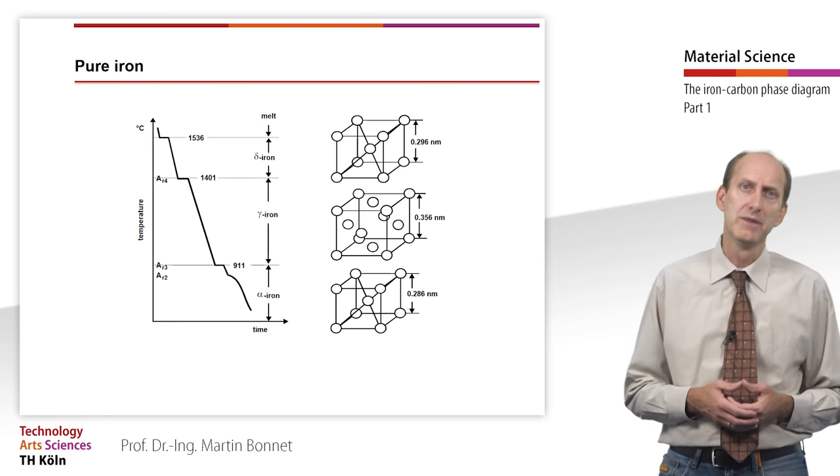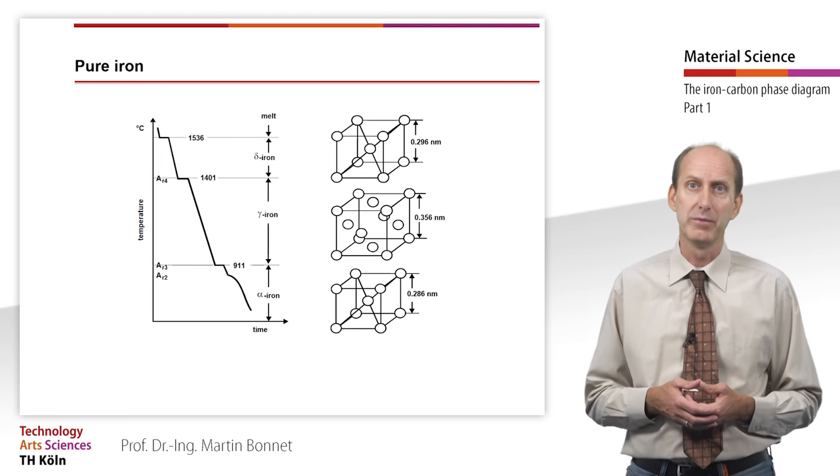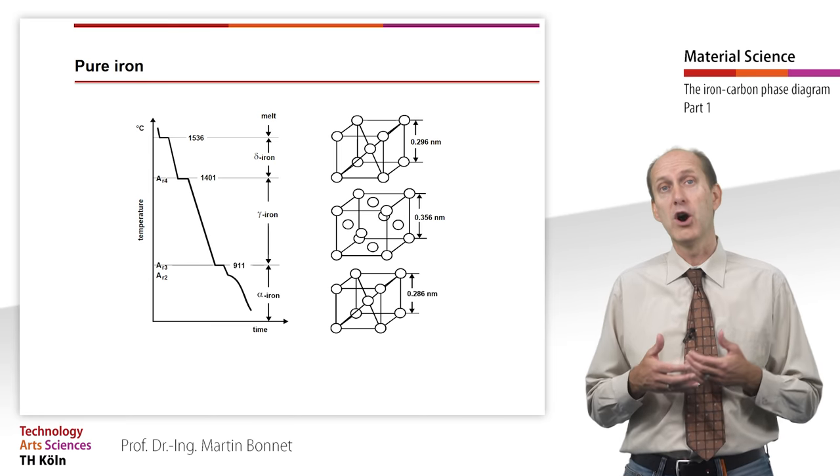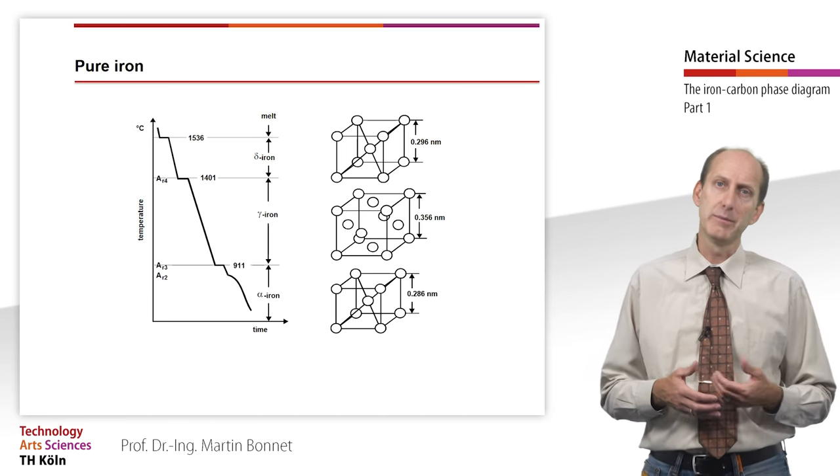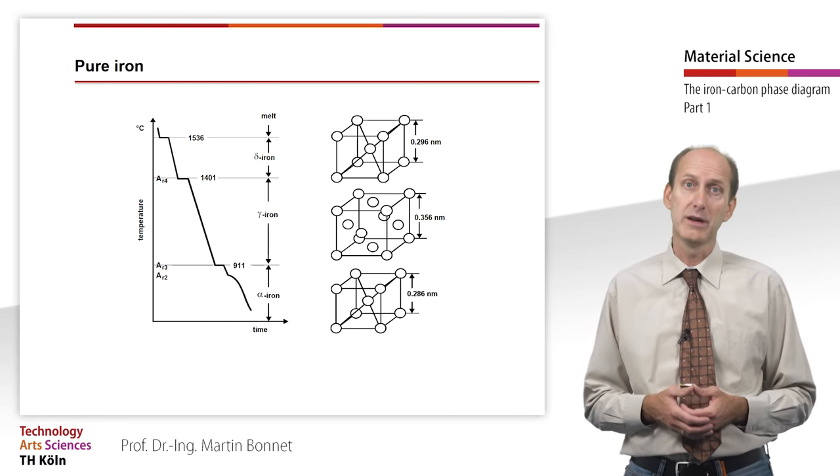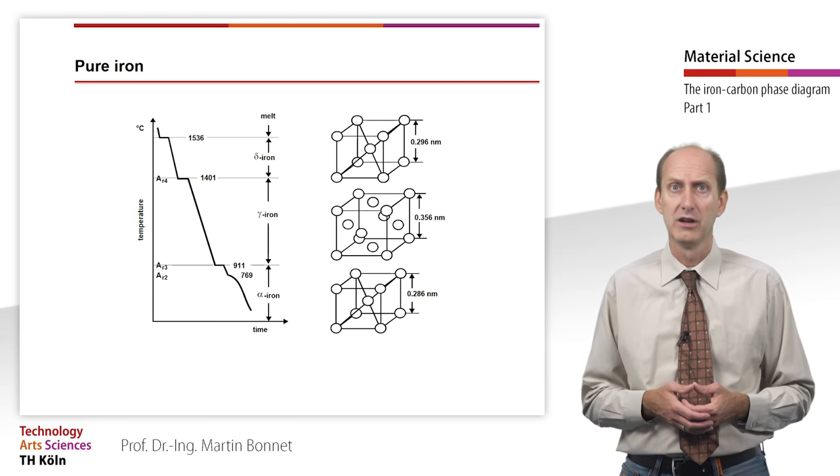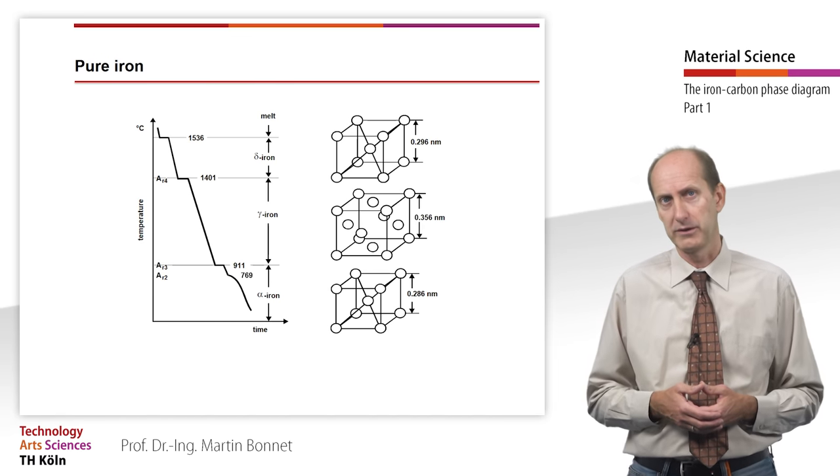At a certain temperature, the ferromagnetic properties of a sample will have disappeared completely, so that it will only be paramagnetic above that point. This temperature is called the Curie temperature. For iron, this temperature is at 769 degrees Celsius, so that the thermal analysis shows a discontinuity at this point.